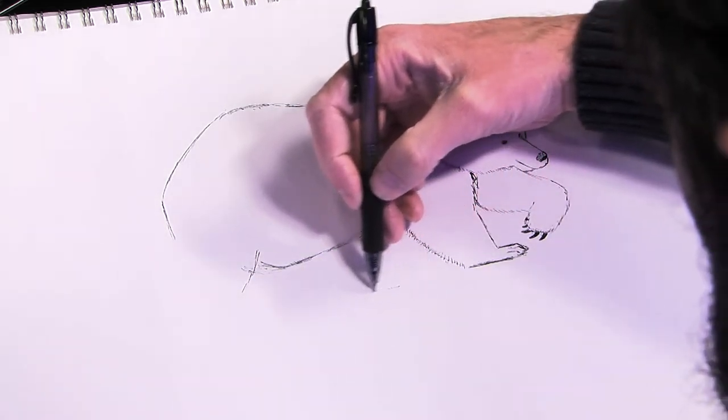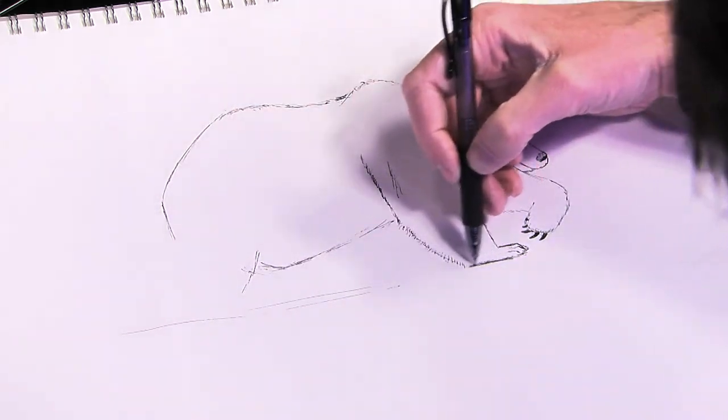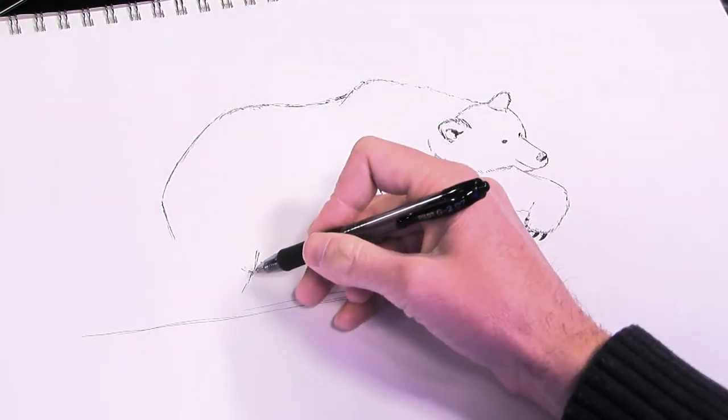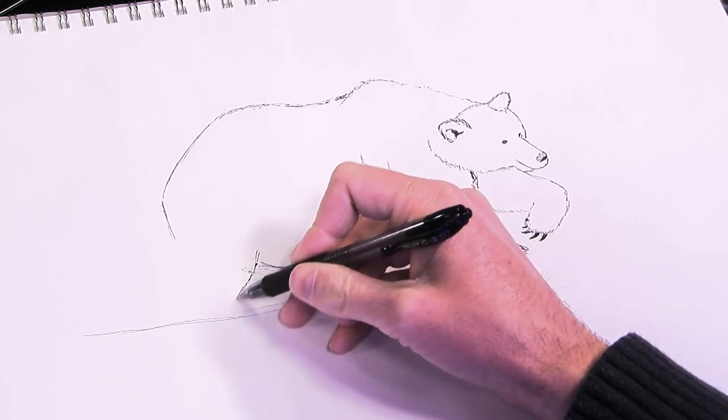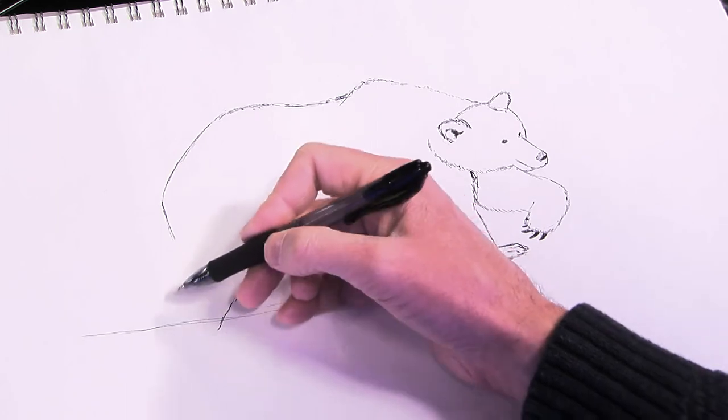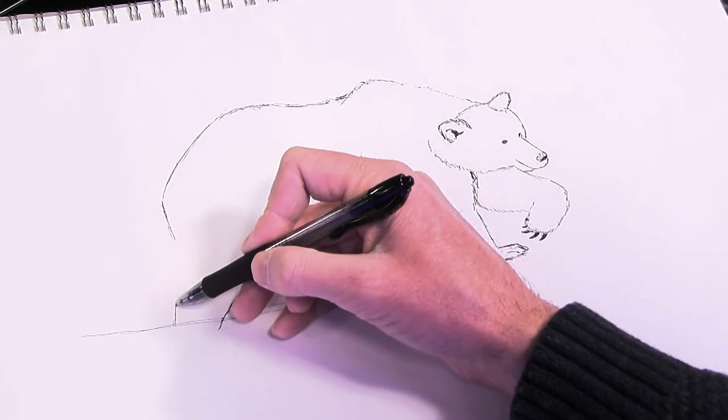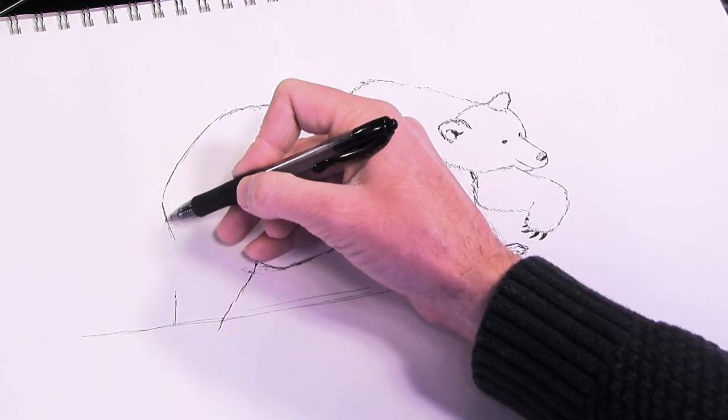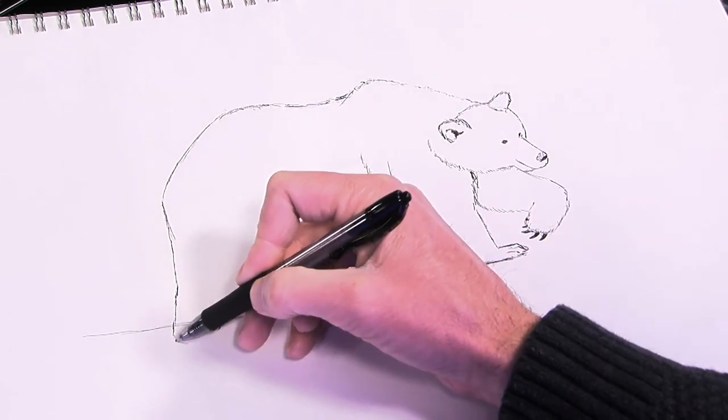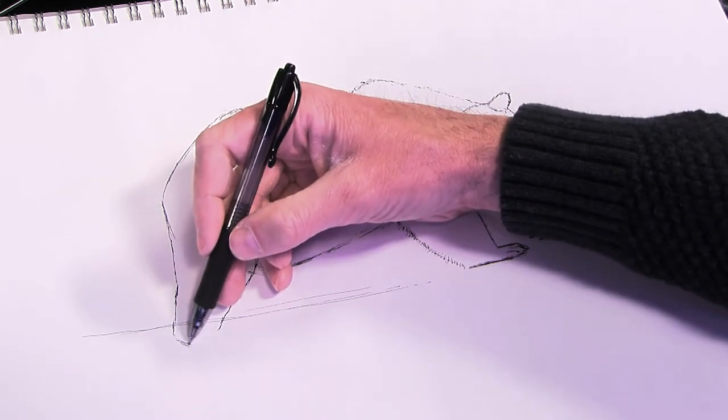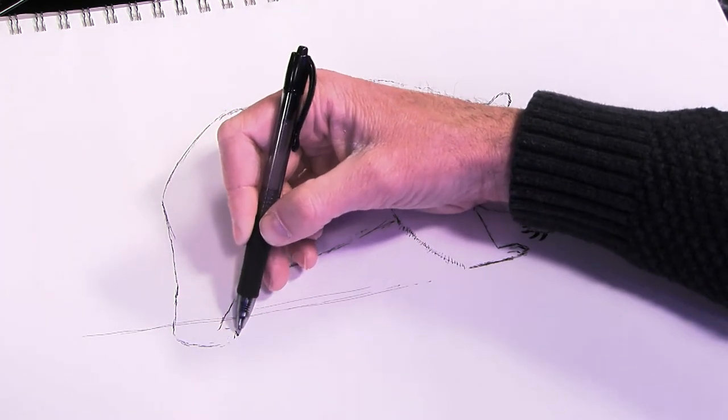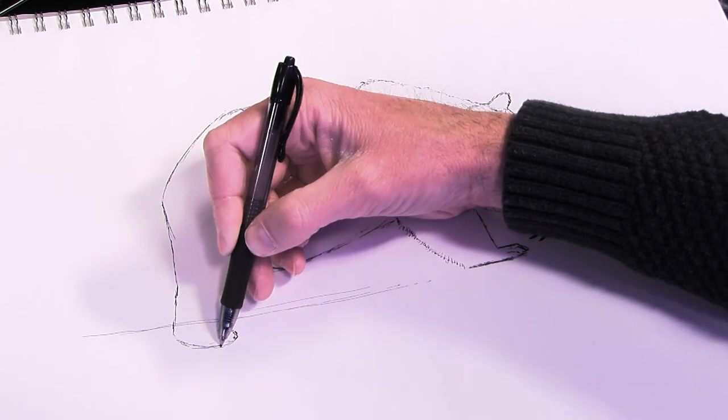Now the tricky thing is, I'm sitting at a funny angle for the camera. So this leg is now slightly off where I want it to be. So I'm going to try to adjust it on the fly here and still have something resembling a grizzly bear. And we'll just round off that back paw.